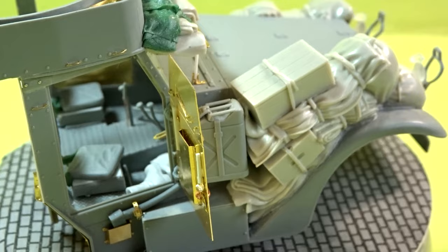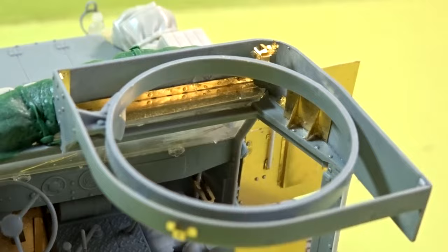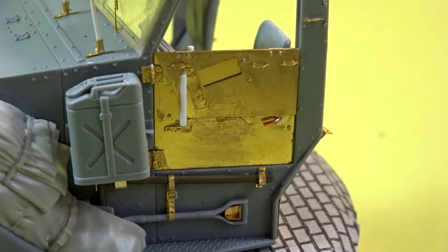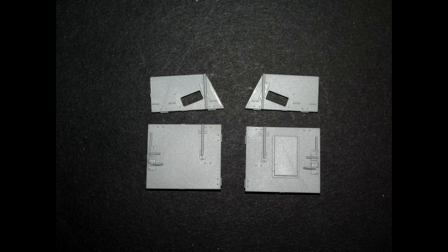Hi everyone, and welcome to the next installment of my build of Dragon's M3A1 in 1:35th scale. As you can see from this short video, the cab has now been completed using the Voyager PE set, along with the Panzerart resin storage set, and a little bit of bits and bobs for myself. So if this is something that you're interested in, then please feel free to pull up a chair, grab a brew, and let's go do some modeling.